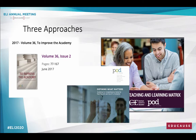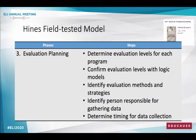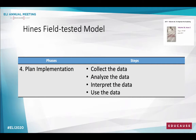Let's begin with the field-tested model, the Hines publication. It consists of four phases. The first is to identify the center's evaluation capacity. The next phase is curriculum conceptualization — articulating the center's outcomes, organizing the services and offerings into distinct programs, mapping the programs to the outcomes, and writing program goals and offering outcomes for each. The third phase is evaluation planning, where you determine the evaluation levels for each program, confirm those with a logic model, and identify evaluation methods and strategies. You also identify who is responsible for gathering data and determine the timing for data collection. The fourth phase is plan implementation, where you're actually collecting the data, analyzing it, interpreting, and using it.